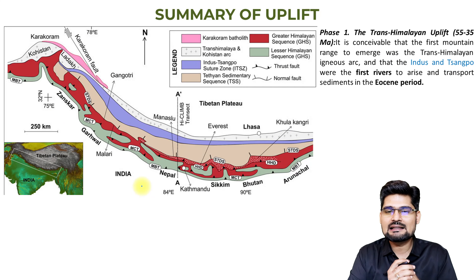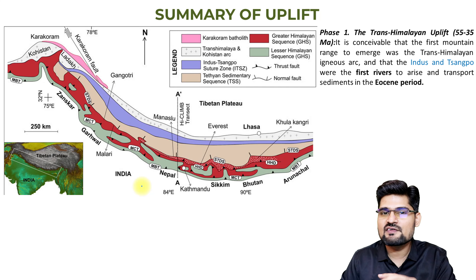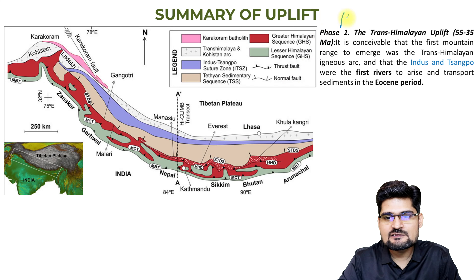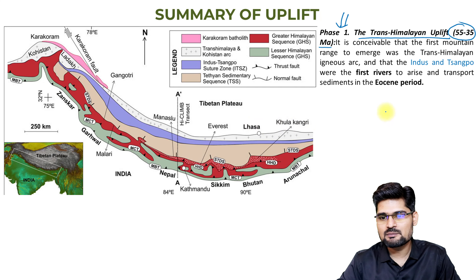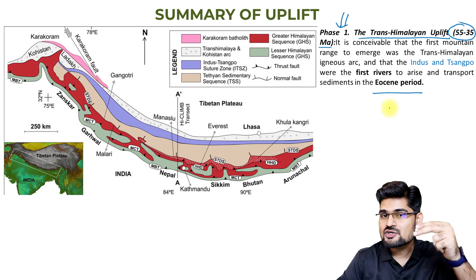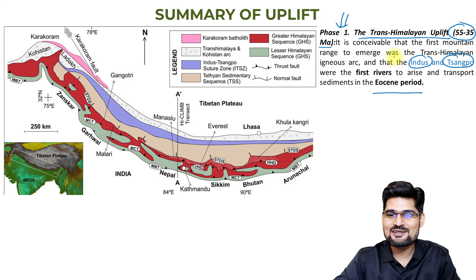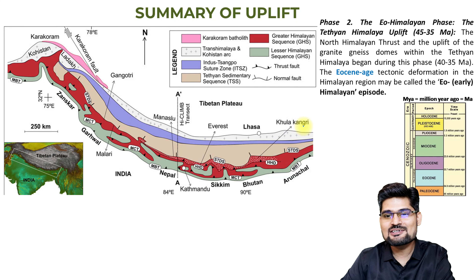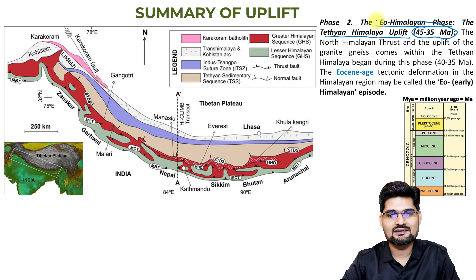Now let's understand the phases of uplift in summary. The first phase is called the Trans-Himalayan Uplift, the oldest phase, from 55 to 35 million years ago — the Eocene period. During this phase, the two major rivers, the Indus and the Brahmaputra, rose. That is why they are also called antecedent streams — they are older than the Himalaya itself.